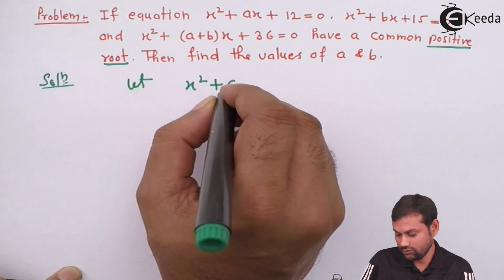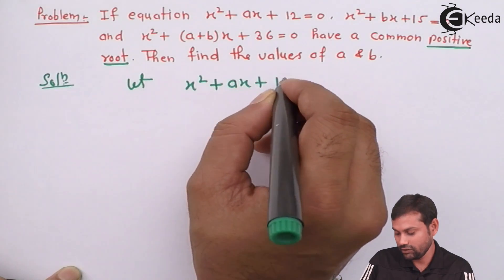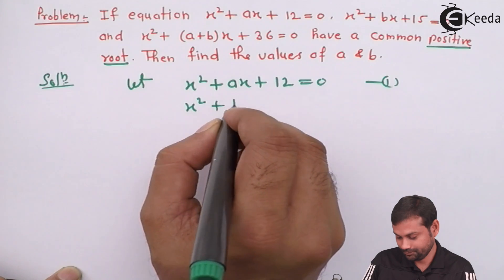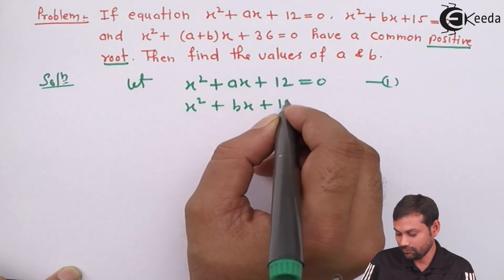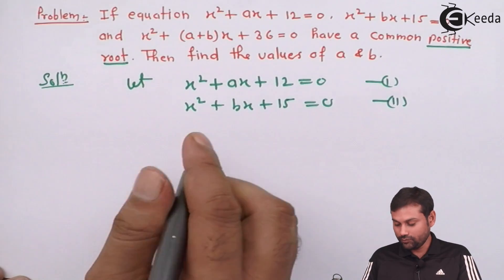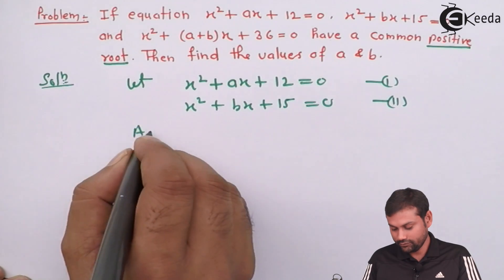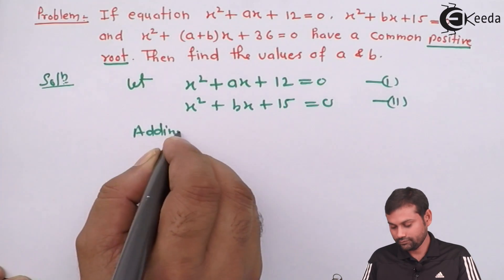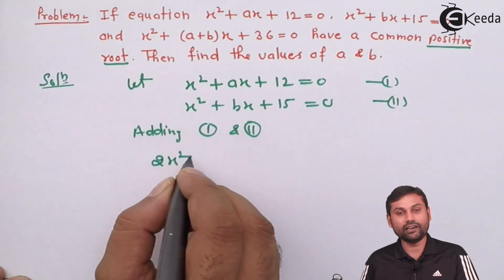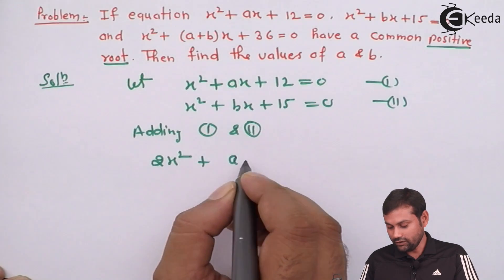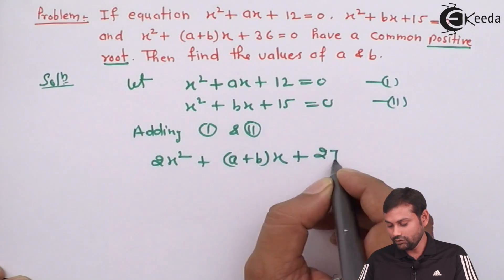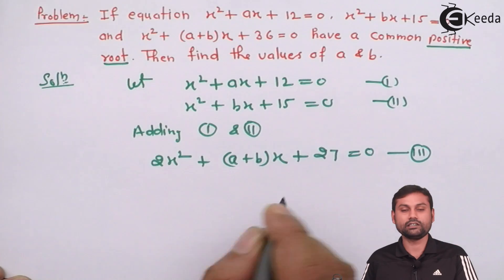Let x² + ax + 12 = 0 be the first equation, and x² + bx + 15 = 0 be the second equation. Now I am going to add these two. Adding equation 1 and 2, we get 2x² + (a+b)x + 27 = 0. Let this be the third quadratic equation.